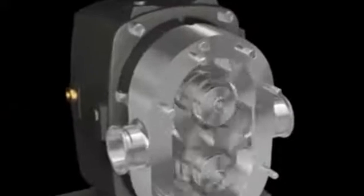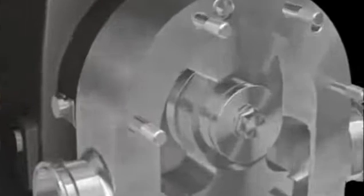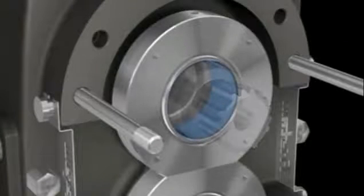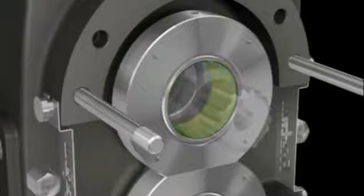True CIP also means no performance loss. The design of the Fristam FKL allows CIP flow to easily reach all areas of the pump's wet end, including the seals.